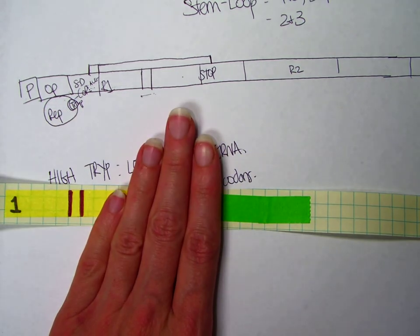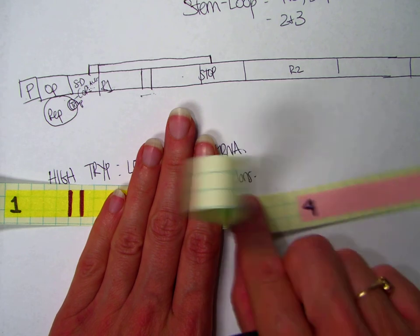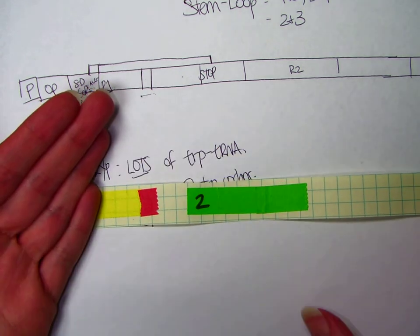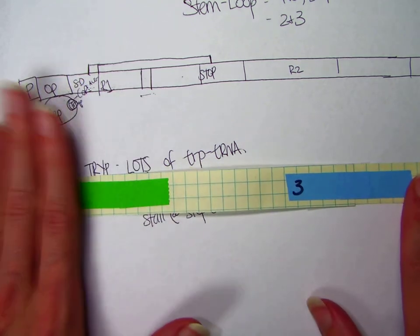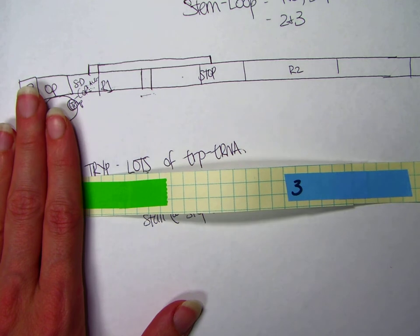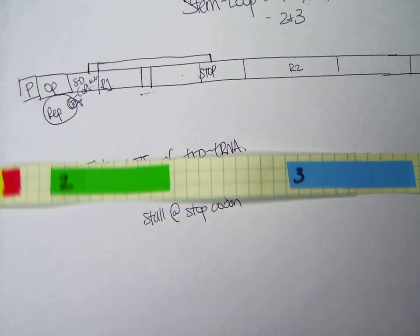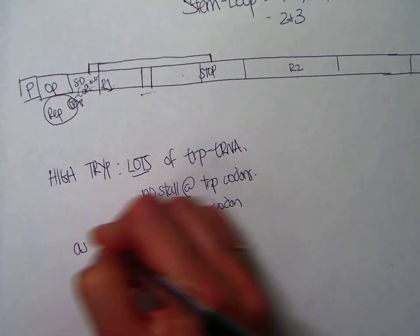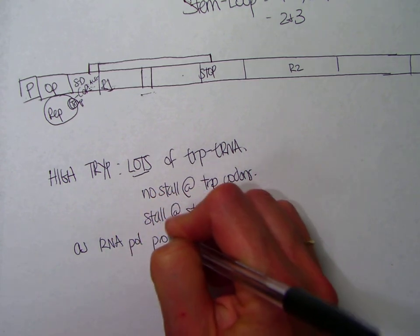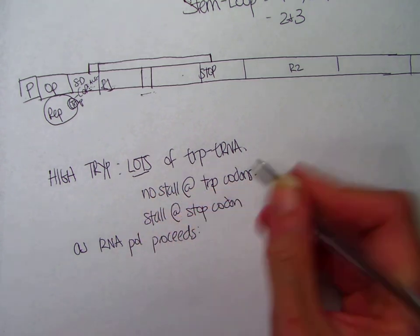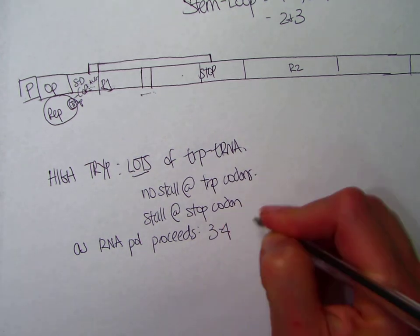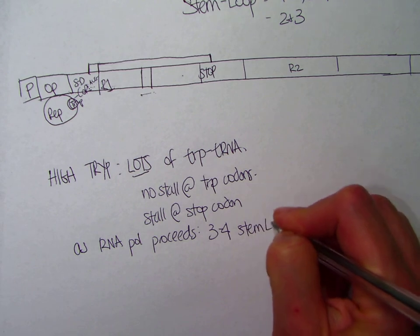However, it's important to realize that 2 and 3 also cannot stem loop, because part of 2 is covered up by the ribosome, and so we can't make the 2-3 stem loop. So as the RNA polymerase proceeds, it's going to go past 3, it's going to transcribe 4, and then we get the 3-4 stem loop.